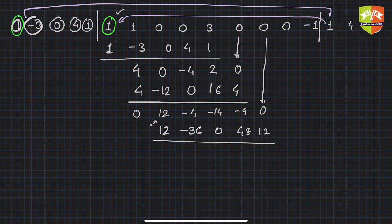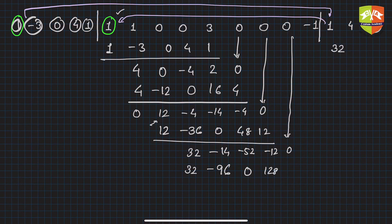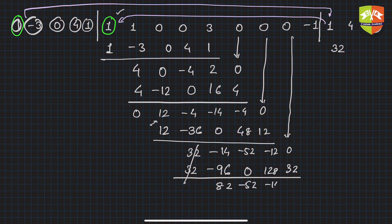After subtracting, the first term cancels and we get: 32, −14, −52, −12. Bring down the next 0. The next quotient digit is 32. Multiply 32 by the divisor: 32, −96, 0, 128, 32. Subtract to get: 0, 82, −14, −32. Then bring down the −1.